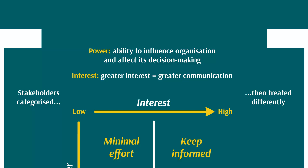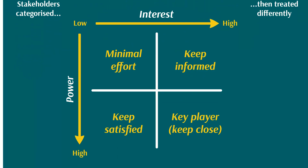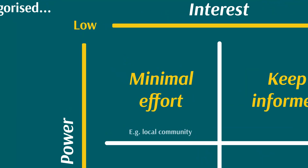Using those two criteria, stakeholders are categorized into one of the four quadrants and treated differently depending on where they feature on the matrix. The minimal effort quadrant is where stakeholders have low interest and low power. An example is the local community as an external stakeholder — they're not really that interested in the business's policies, procedures, or long-term strategy. The probably only time they'd have interest is if the business did something that directly affected the local community, like building a production facility in a residential area.